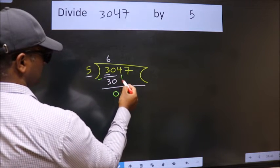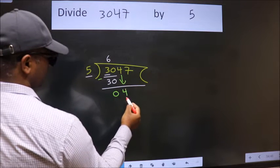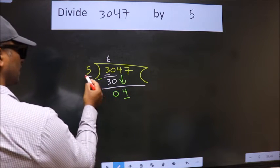After this, bring down the beside number. So, 4 down. Now, here we have 4, here 5.